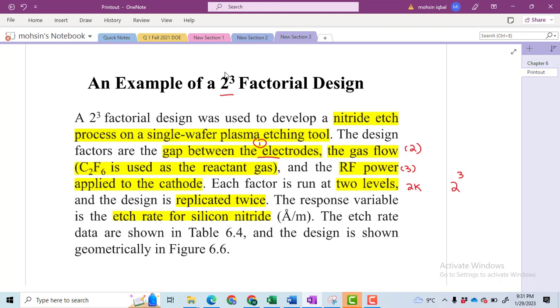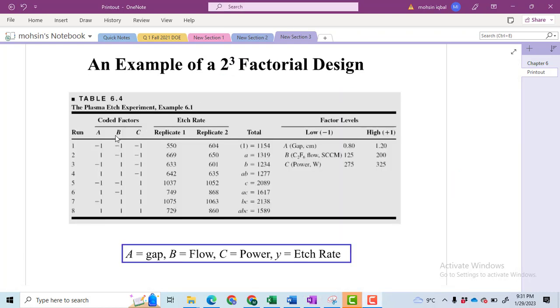The response variable is the etch rate for the silicon nitride. I have only one response: the etch rate. Data has been shown in table 6.4. This is the data available to us. We have three factors A, B, C. I have told you in the first part of this video how we will make this design. Then this data has been given to you in the exam for replicate one and replicate two. However, in practical purposes you will have to perform each of these treatments twice so you will get the data.